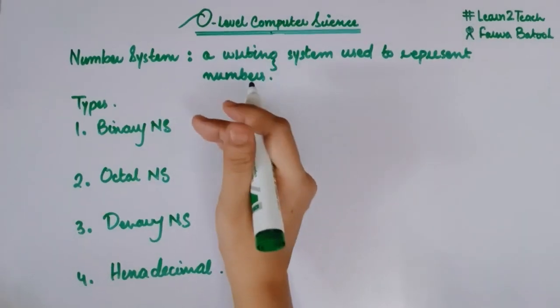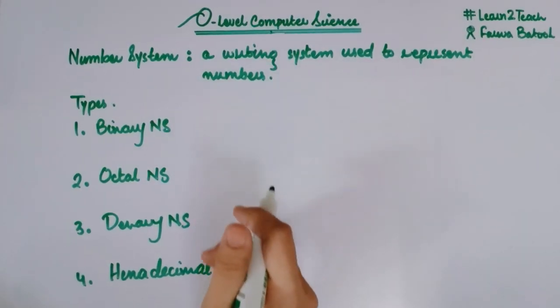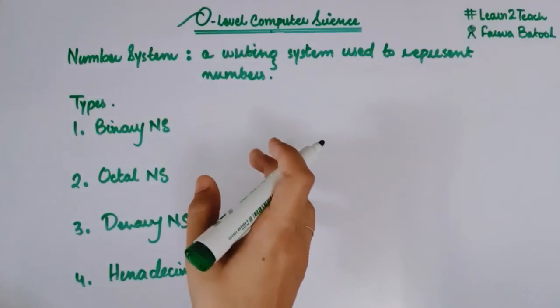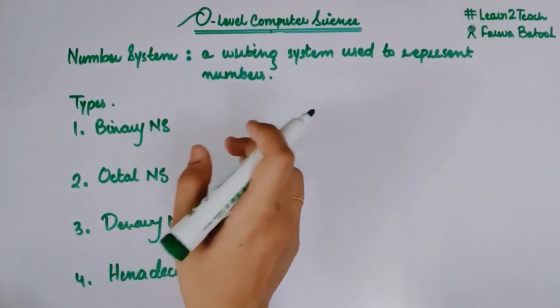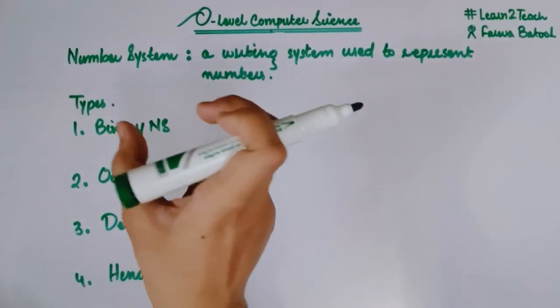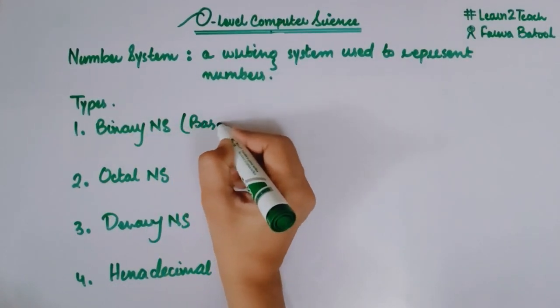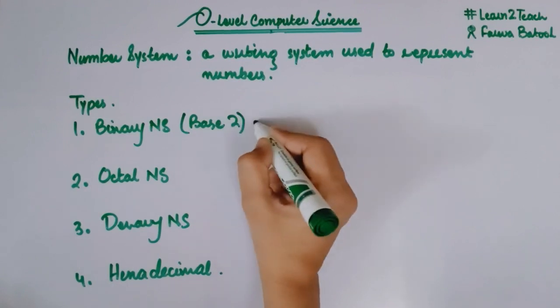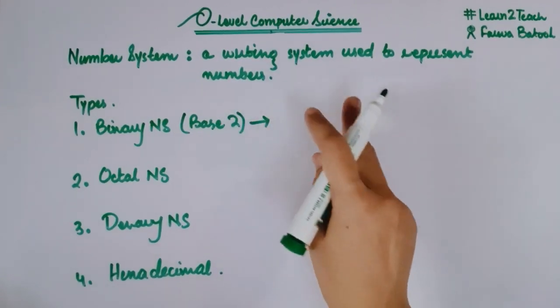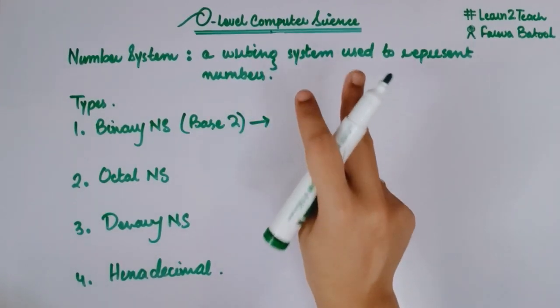So here are the different types of number systems that are being used in computer system. Starting from binary number system. Binary number system is also known as base two number system. Why is it so? Because here I am having only two digits to represent the numbers.